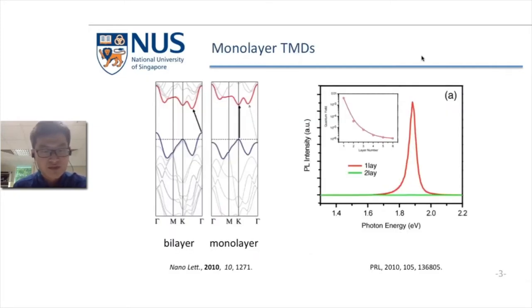Group 6 transition metal dichalcogenides are suitable candidates for light emitting devices, partially because they have a very interesting electronic band structure evolution from indirect band gap to direct when thinned down to monolayer. As we can see from the figure, the quantum yield for monolayer is much larger than thick layers.